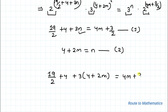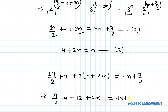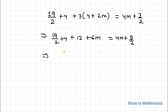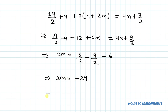Substituting n = 4 + 2m into the first equation: 19/2 + 4 + 3(4 + 2m) = 4m + 3/2. This simplifies to 19/2 + 4 + 12 + 6m = 4m + 3/2, which gives 2m = 3/2 − 19/2 − 16 = −8, so m = −4. That is our answer.